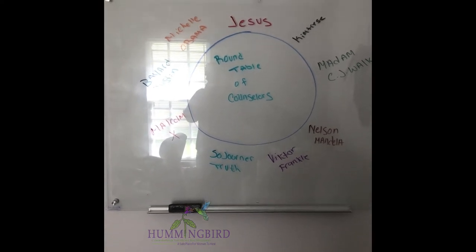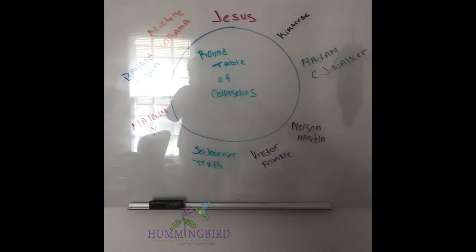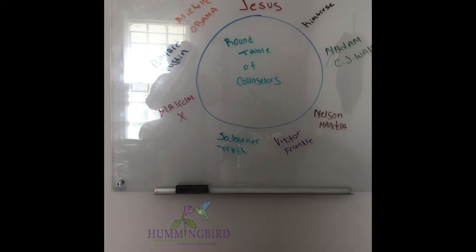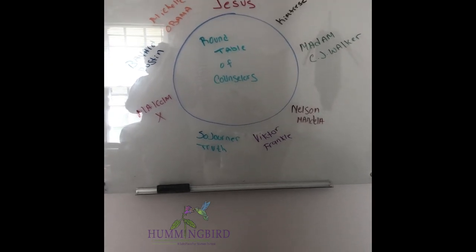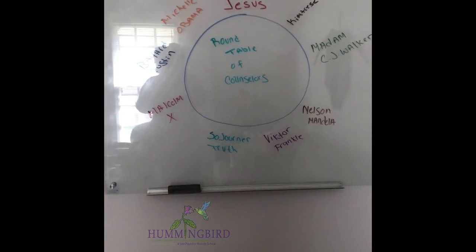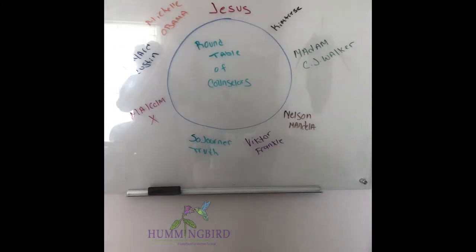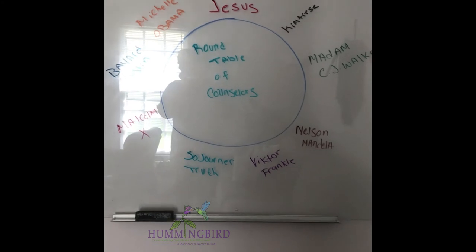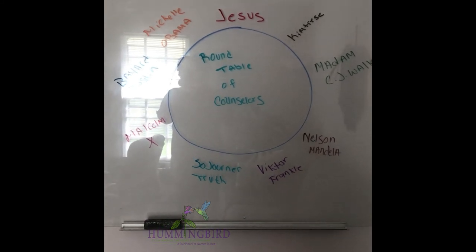I just wanted to put this up so you can get the idea of what the round table looks like. I would encourage you to create your own round table. When you have questions, close your eyes, think of yourself at the round table, ask your question, and then go around the table. Because you know these people, because you've studied them, you kind of know the information they will give you. It sounds a little weird, but I'm telling you it has really helped me with a lot of decision making in my life. Here it is — the Round Table of Counselors. I hope it helps you out.